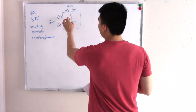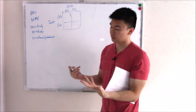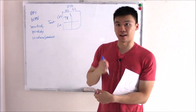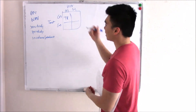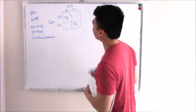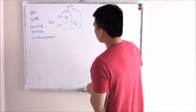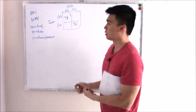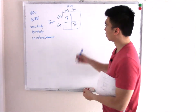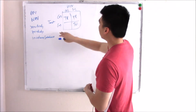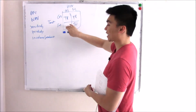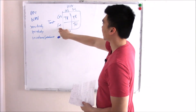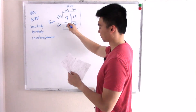If the test is positive and the person actually has HIV, that's correct — we call that a true positive. If the test is negative and the person actually doesn't have HIV, that's correct — we call that a true negative. If the test is positive but the patient actually doesn't have it, we call that a false positive. If the test is negative but the patient actually does have it, we call that a false negative.